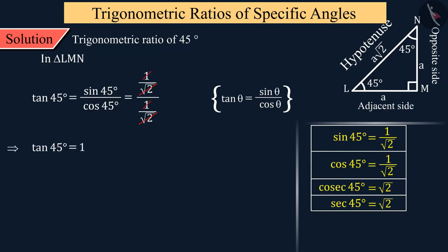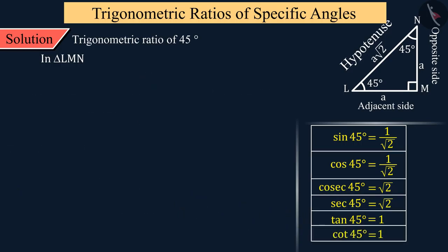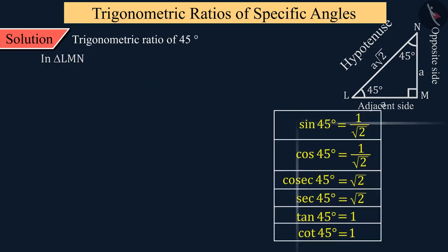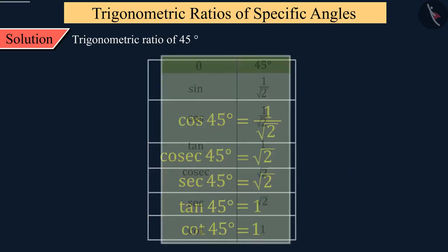Therefore, we can say that the inverse of tan 45°, that is, the value of cot 45°, will also be obtained as 1. Let us now show all the trigonometric ratios of the 45-degree angle in a table.